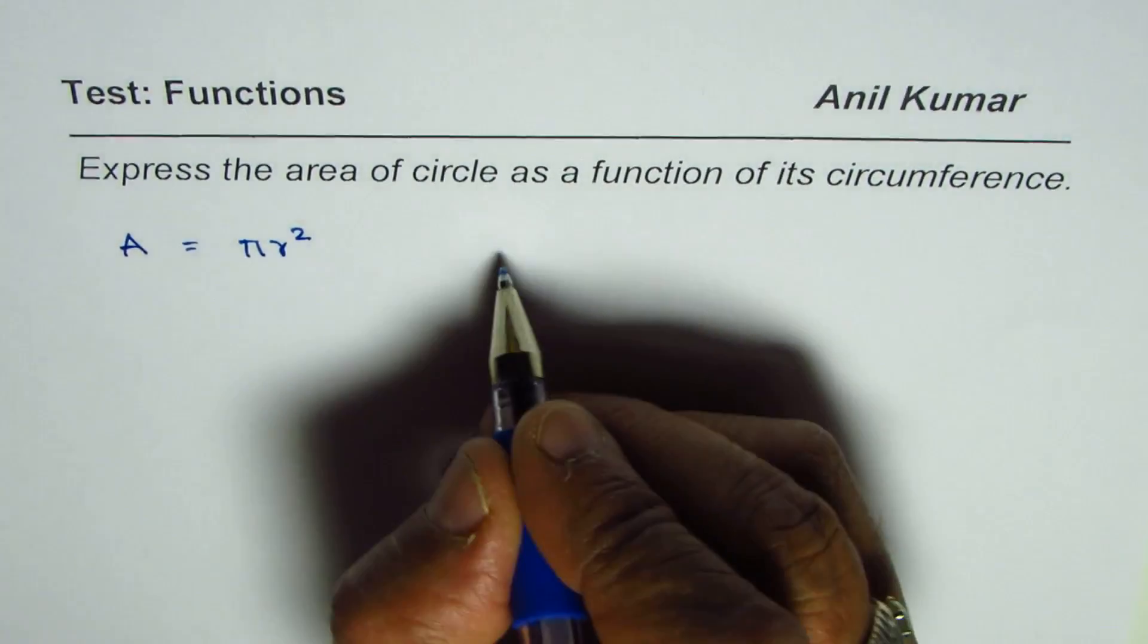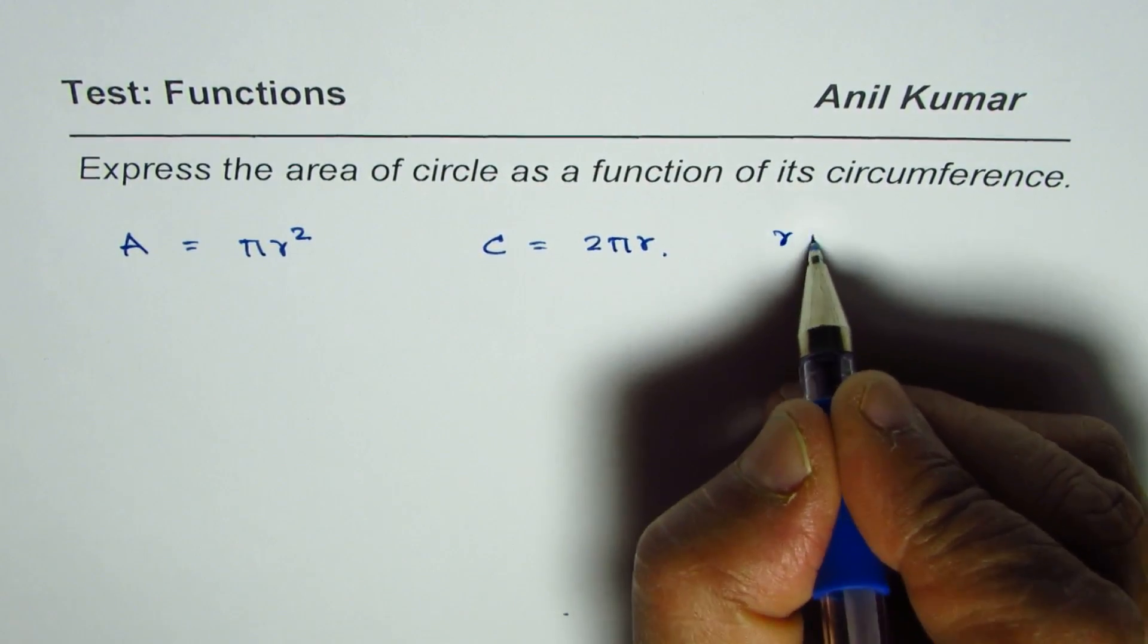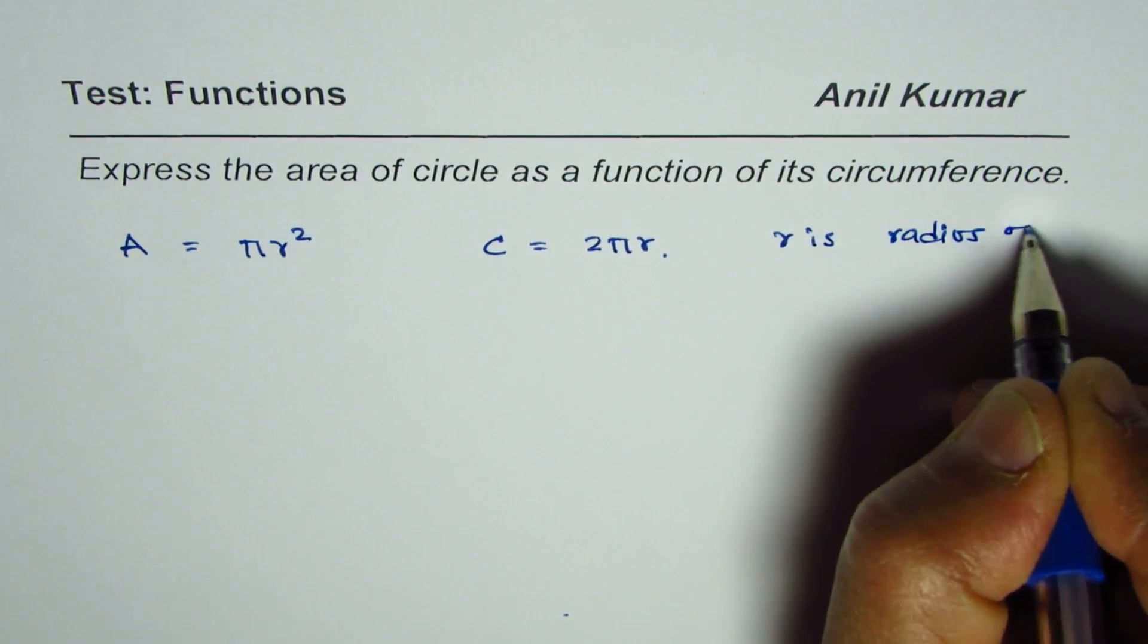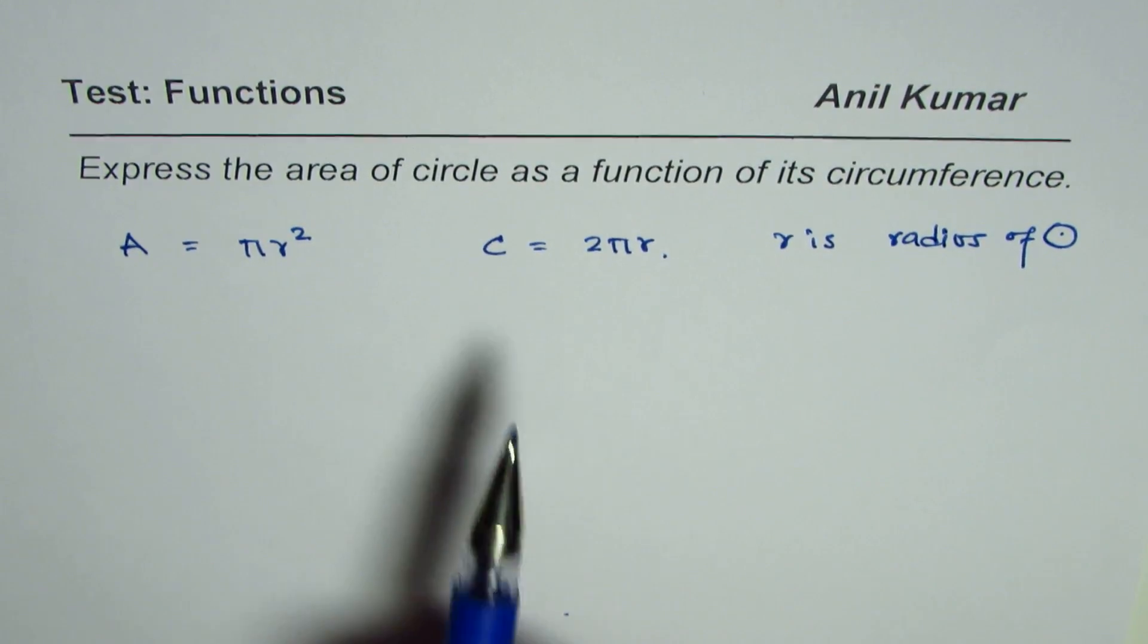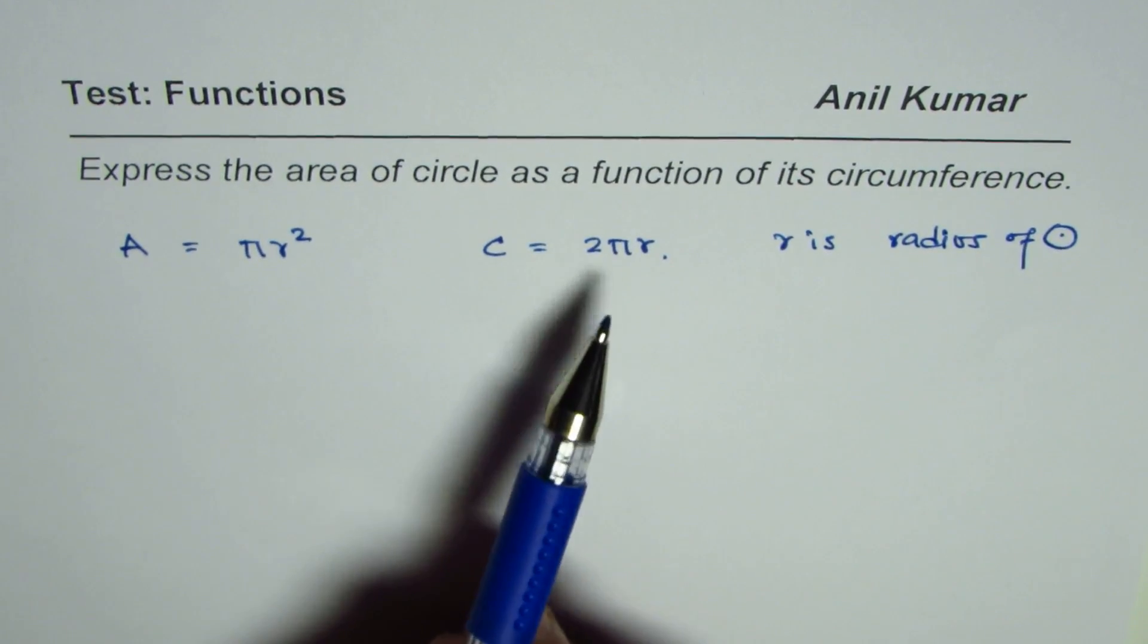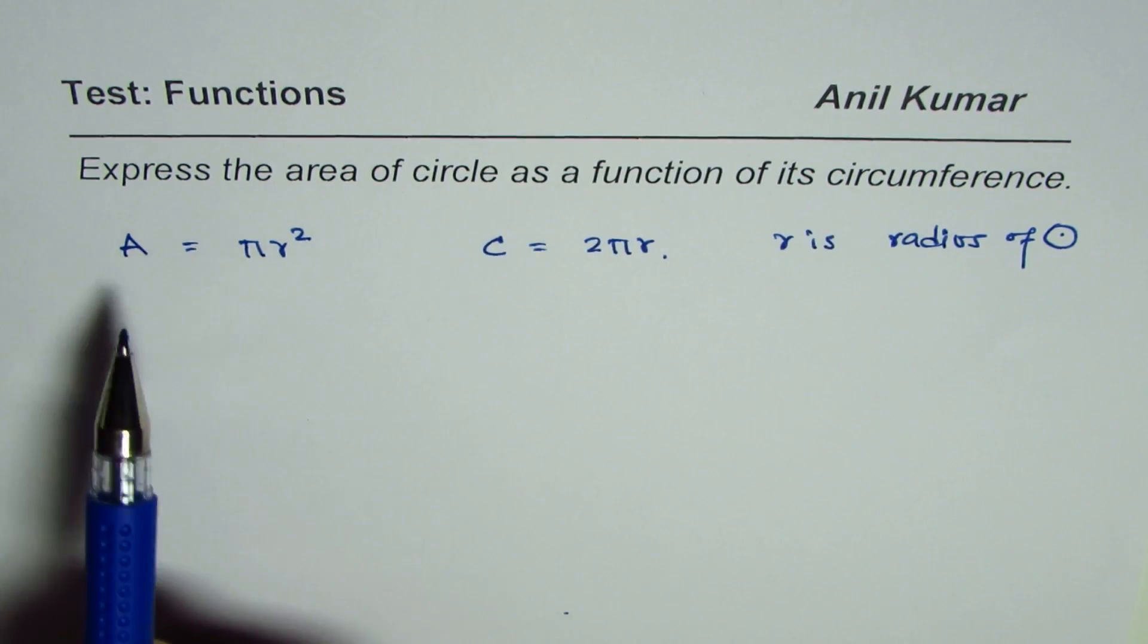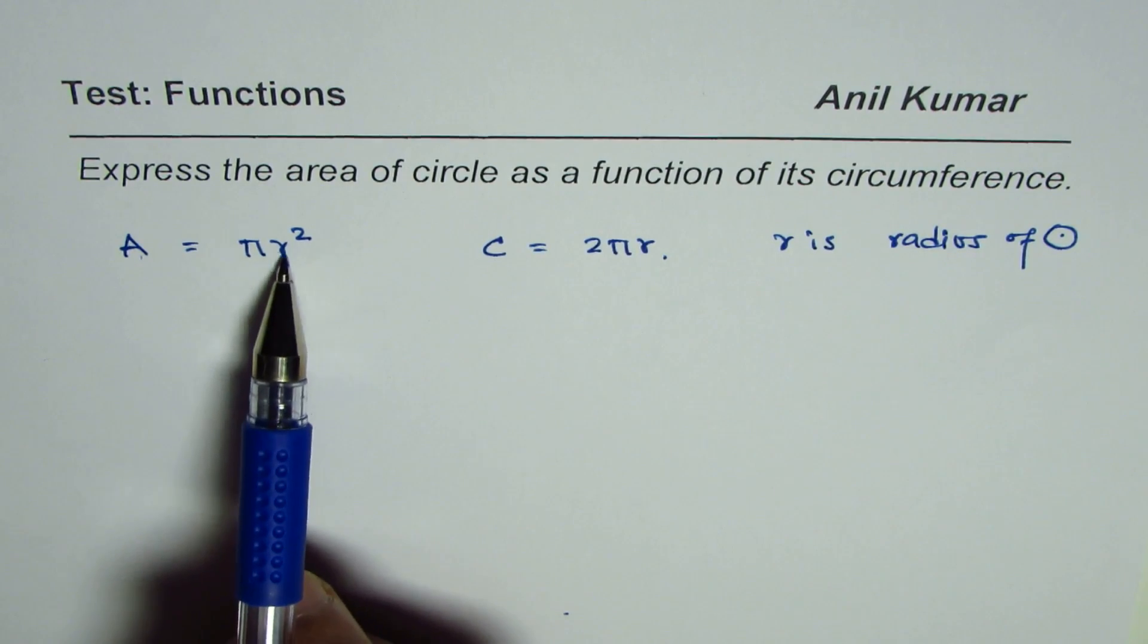and circumference C is 2π r, where r is the radius of the circle. That is how we can relate area and circumference with radius r. Now, the question is to express the area of a circle as a function of its circumference, so we need to find area in terms of circumference, not r.